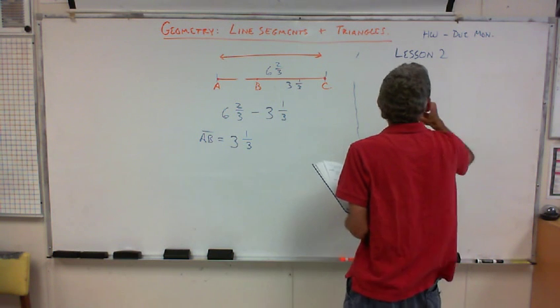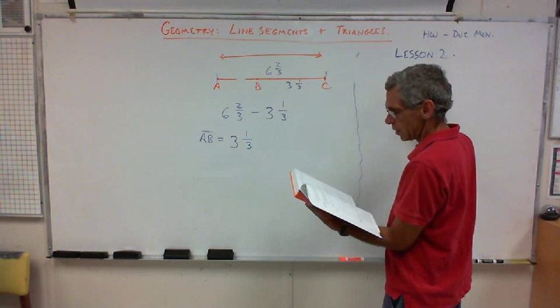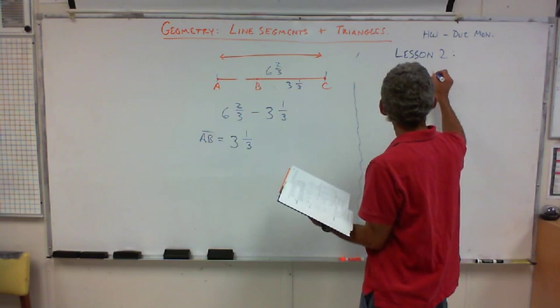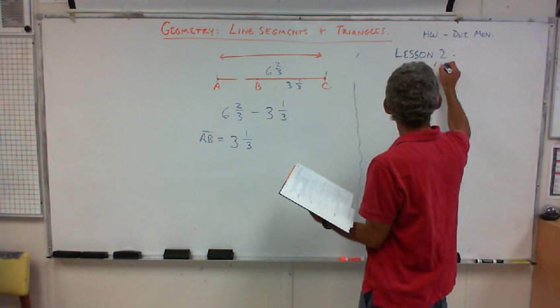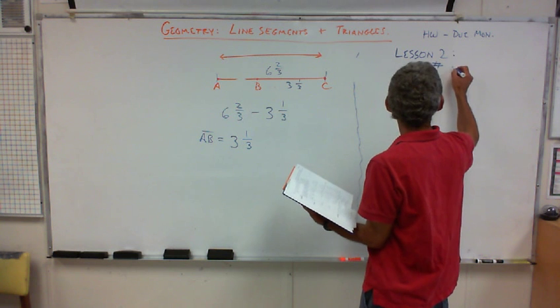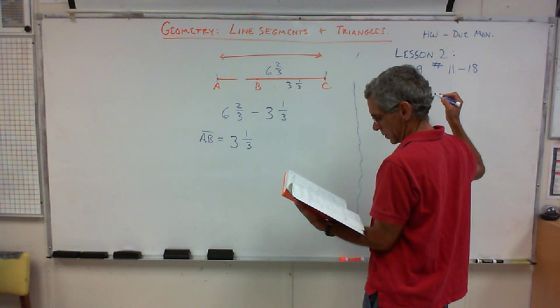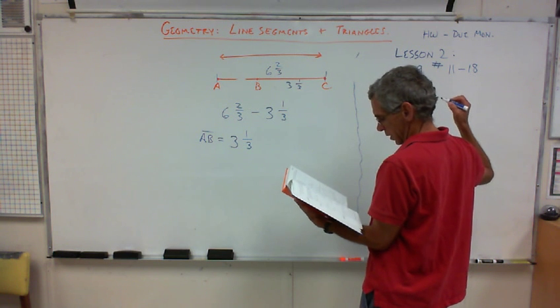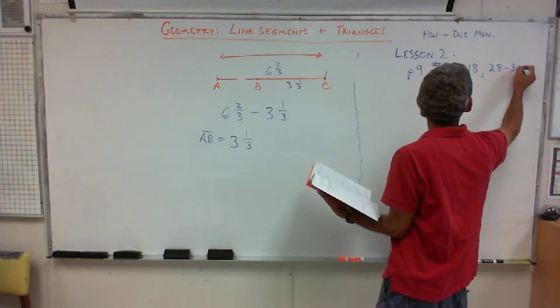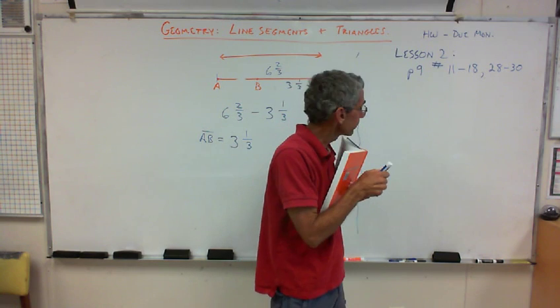So, lesson two questions? So, lesson two. So, yeah. There are going to be questions on that. So, on page nine, page nine, I want you to do numbers 11 through 18, and 28 through 30. Okay? 11 through 18, and 28 through 30. I don't think they'll take you that long.